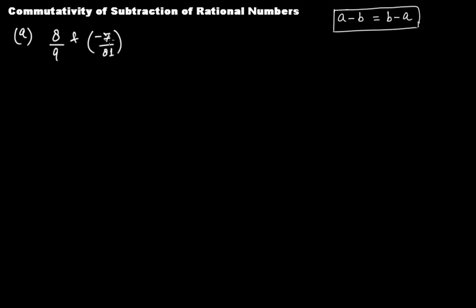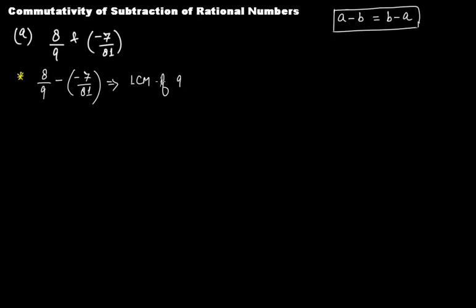To understand this, we have taken two rational numbers 8/9 and −7/81, and let's first subtract −7/81 from 8/9. So we compute 8/9 minus (−7/81). Whenever we add or subtract two rational numbers, we first make them like rational numbers — meaning they should have the same denominator — and to do that we first take the LCM of the denominators.